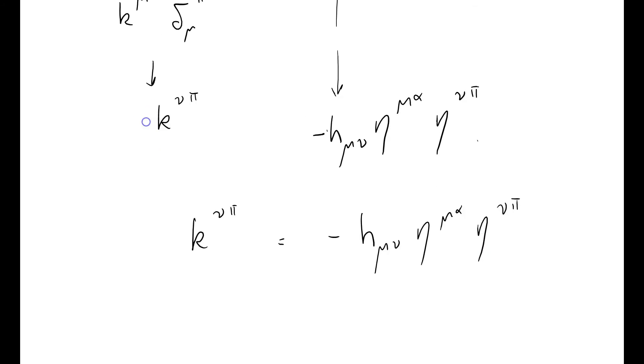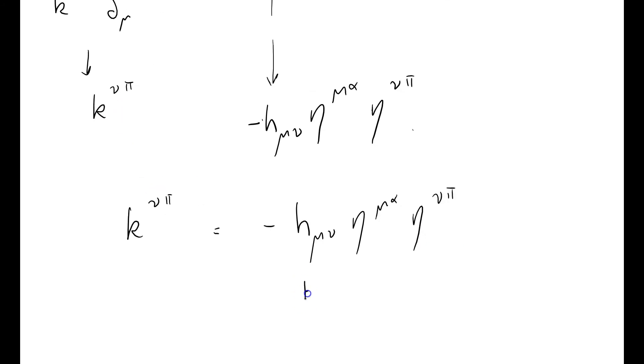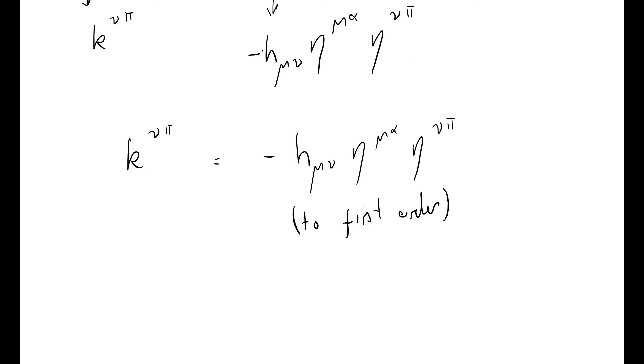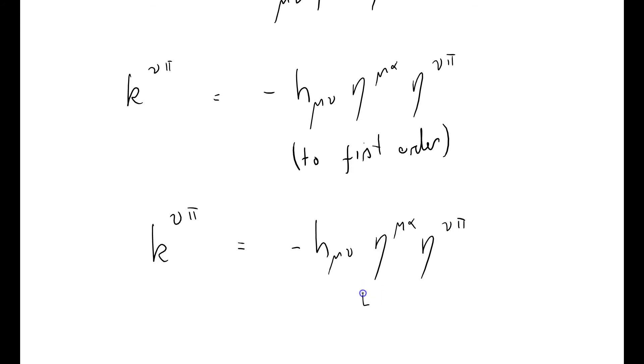Actually, it's not equal exactly. This is equal, but only to first order. Oh, well, that's okay. That's all we're considering. So basically what that tells me is that I can raise and lower my indices: K nu pi equals minus H mu nu eta mu alpha eta nu pi. We can raise and lower our indices simply by using the flat space metric.